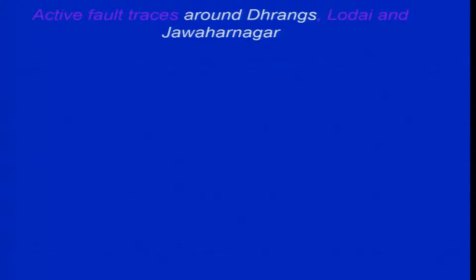We conducted a survey in Kutch after the 2001 Bhuj earthquake using a small aircraft to map the area. The reason was that we did not have very high resolution satellite data for this region and we wanted to map the surface deformation caused by the 2001 Bhuj earthquake — a large and very damaging earthquake. We decided to fly and look at the pattern of damage in Kutch district as well as the surface deformation.